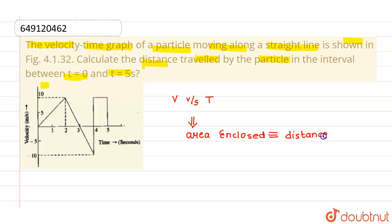Now, in this question, since we have to find out distance between t equals 0 to t equals 5 seconds, so basically we have to find out the area enclosed from the time interval t equals 0 to t equals 5 seconds.